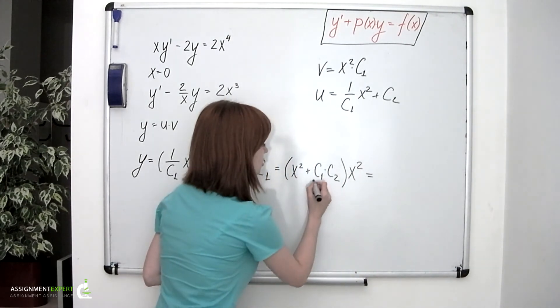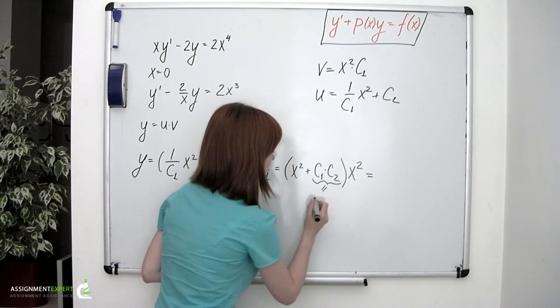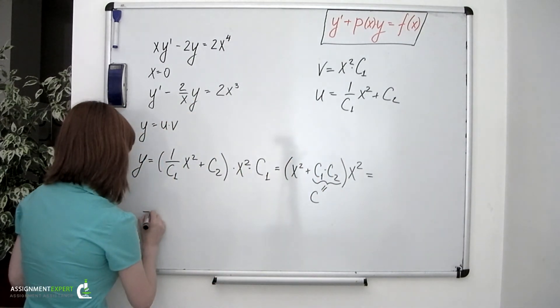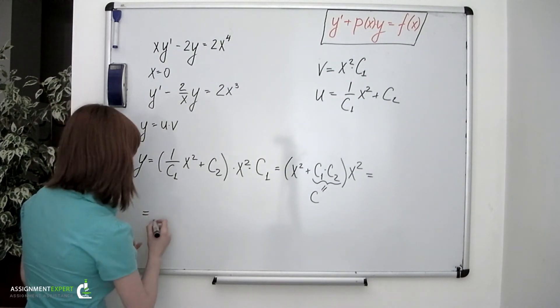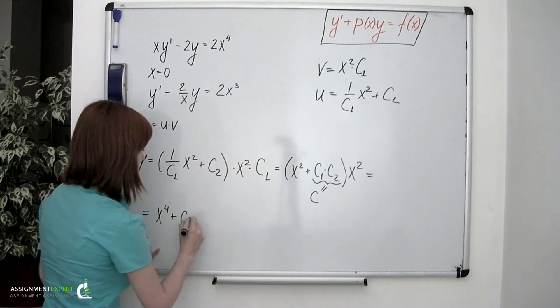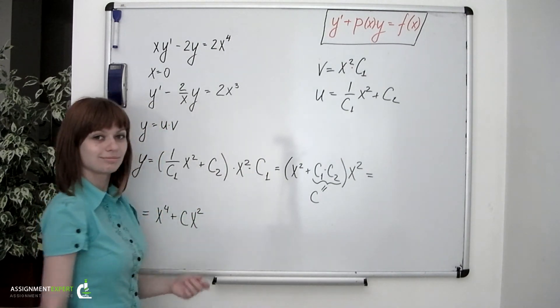And so our final answer would be x squared. We can also denote this constant right here as, say, c with an index. And so our final answer would be x to the fourth plus the constant multiplied by x squared.